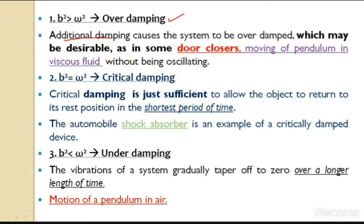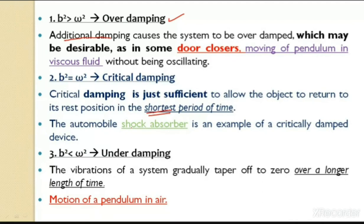The second case is critical damping. In critical damping, it is the shortest period for the particle to come to the mean position. The damping provided is just sufficient to allow the object to return to the rest position in a short interval of time. An example of critical damping is shock absorbers. I will now go into the theoretical treatment of these three cases.